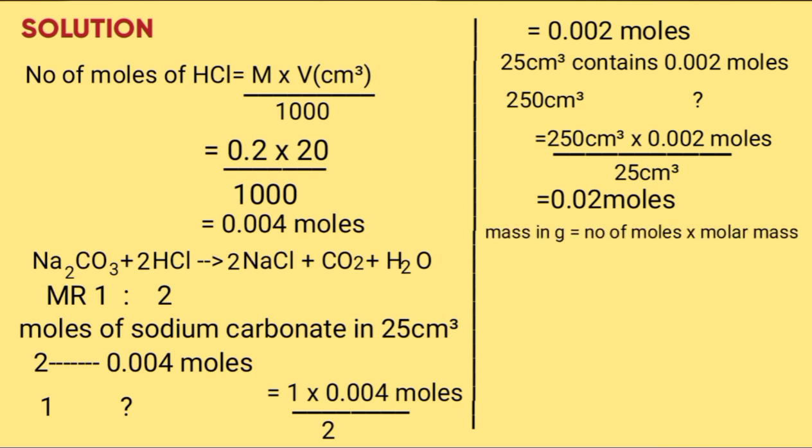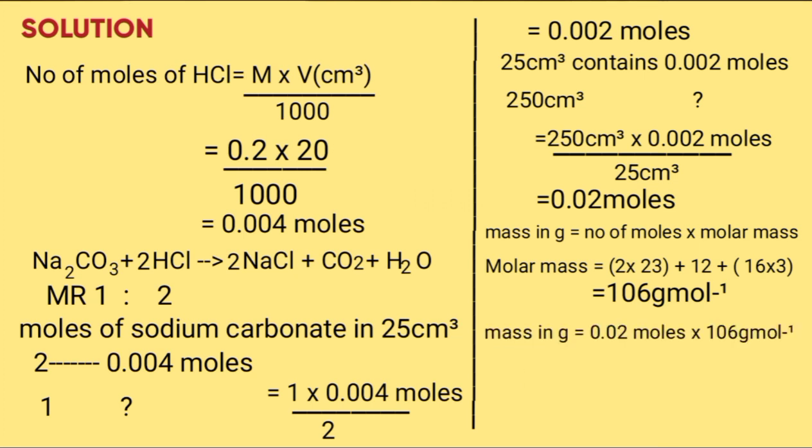Mass in grams of sodium carbonate in 250 cm³ will be given by number of moles times molar mass. Molar mass of sodium carbonate is 2 times 23 plus 12 plus 16 times 3 gives you 106 grams per mole. Therefore, mass in grams will be given by 0.02 moles times 106 grams per mole gives you 2.12 grams.